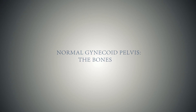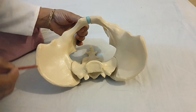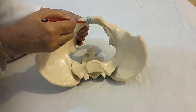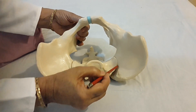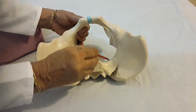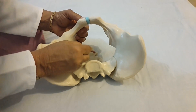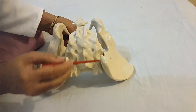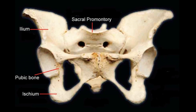Normal gynecoid pelvis — the bones. The articulated human pelvis comprises four bones: two innominate bones on either side, one larger one — the sacrum — and one smaller one — the coccyx — in the center, forming the base of the spine and pelvis. The sacrum forms the rear of the pelvis and articulates with the innominate bones on the two sides.